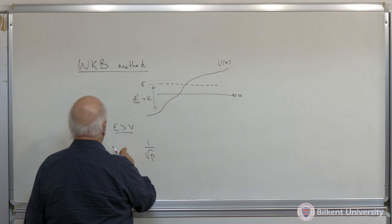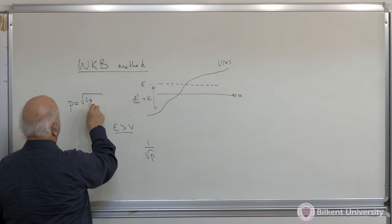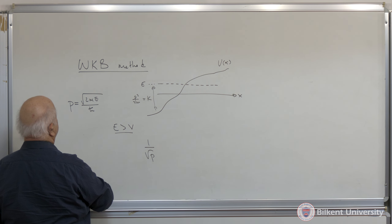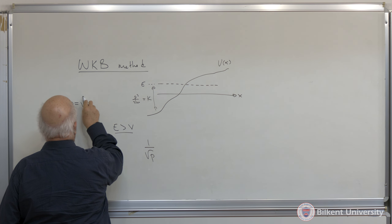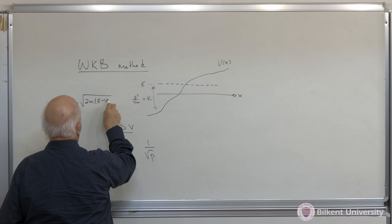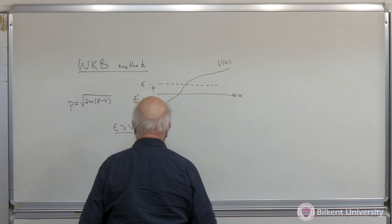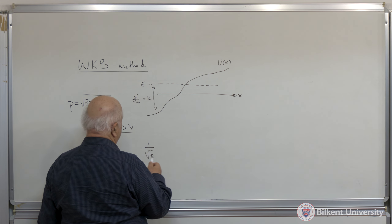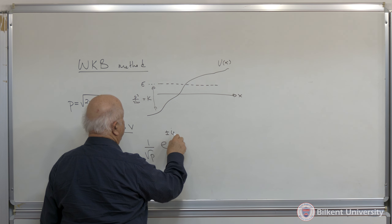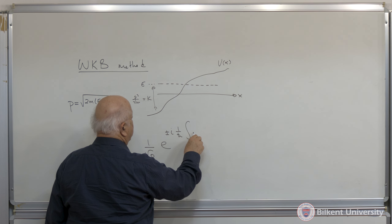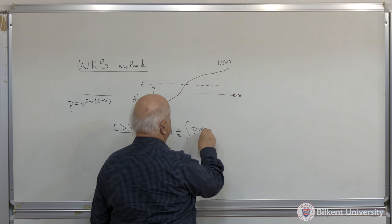Where by P we mean the classical momentum. In that case we found that we can find approximate solutions which have the form 1 over square root of P. P is equal to the square root of 2m(E minus V), where E minus V is the kinetic energy, so 2m times kinetic energy gives P squared. We have to discuss the normalization separately.